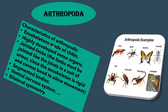The next phylum is Arthropoda. They have exoskeletons made of chitin, highly developed sense organs, and jointed limbs. The limbs must be jointed since the exoskeleton is rigid and cannot bend to allow movement. They also have segmented bodies, a ventral nervous system and bilateral symmetry. Examples of arthropods include prawn, spider, butterfly, housefly, scorpion, cockroach, crab, centipede, etc.